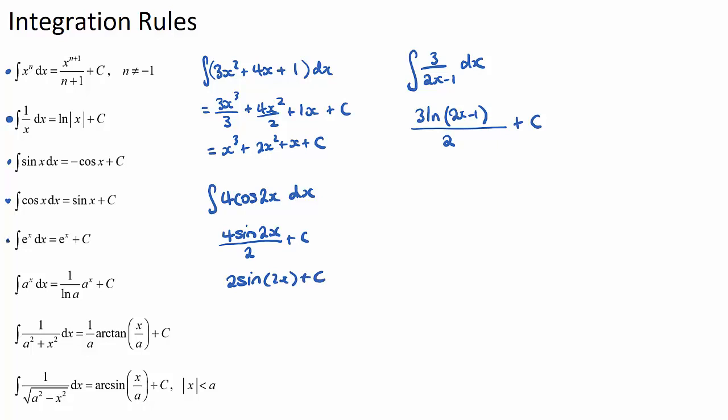And the e to the x, this is a common one. If we have e, let's say, to the 5x dx, the integral of an exponential function is just e to the 5x, and we divide this by the derivative of our power. So if we're integrating e to the 5x, it'll be e to the 5x over 5 plus c.